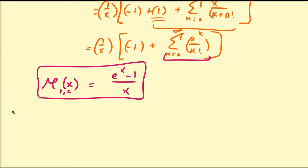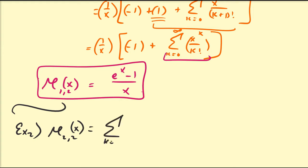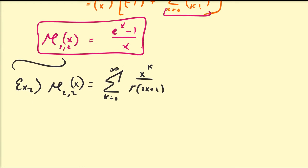Example 2: find the elementary representation of E_{2,2}(x). Using the definition, this is the sum from k=0 to infinity of x^k divided by Gamma(2k + 2), which equals the sum from k=0 to infinity of x^k divided by (2k+1) factorial.